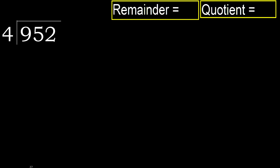952 divided by 4. 9 — we need to find which number 4 multiplied by is nearest to 9, but not greater.